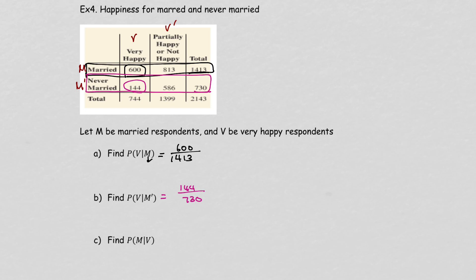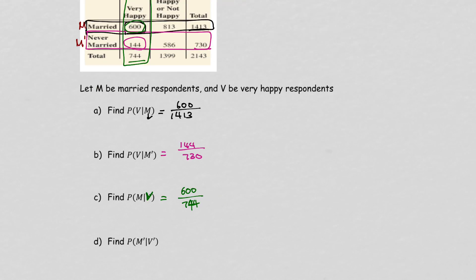For M given V: given V is the very happy box, total is 744. M from that box is 600, so it's 600 over 744. For M-not given V-not: V-not total is 1,399, and M-not from that box is 586, giving 586 over 1,399. You can convert all solutions to decimals by doing numerator divided by denominator.